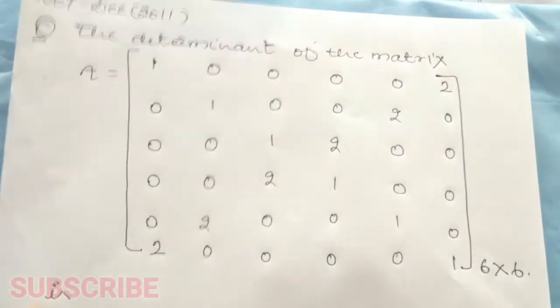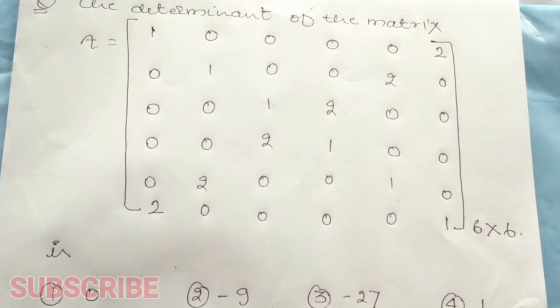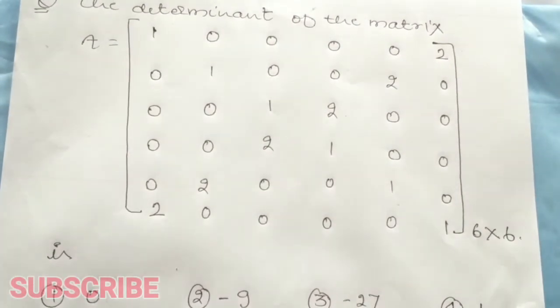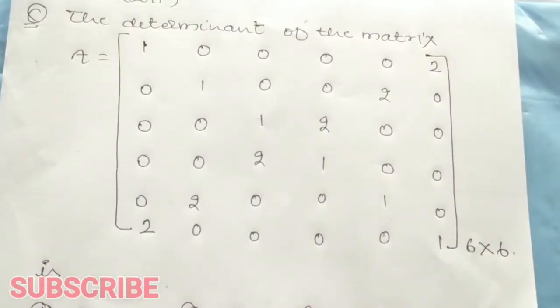So we are asked what this matrix determinant is: whether it is 0, whether it is minus 9, whether it is minus 27, or whether it is 1. This is a very simple question.